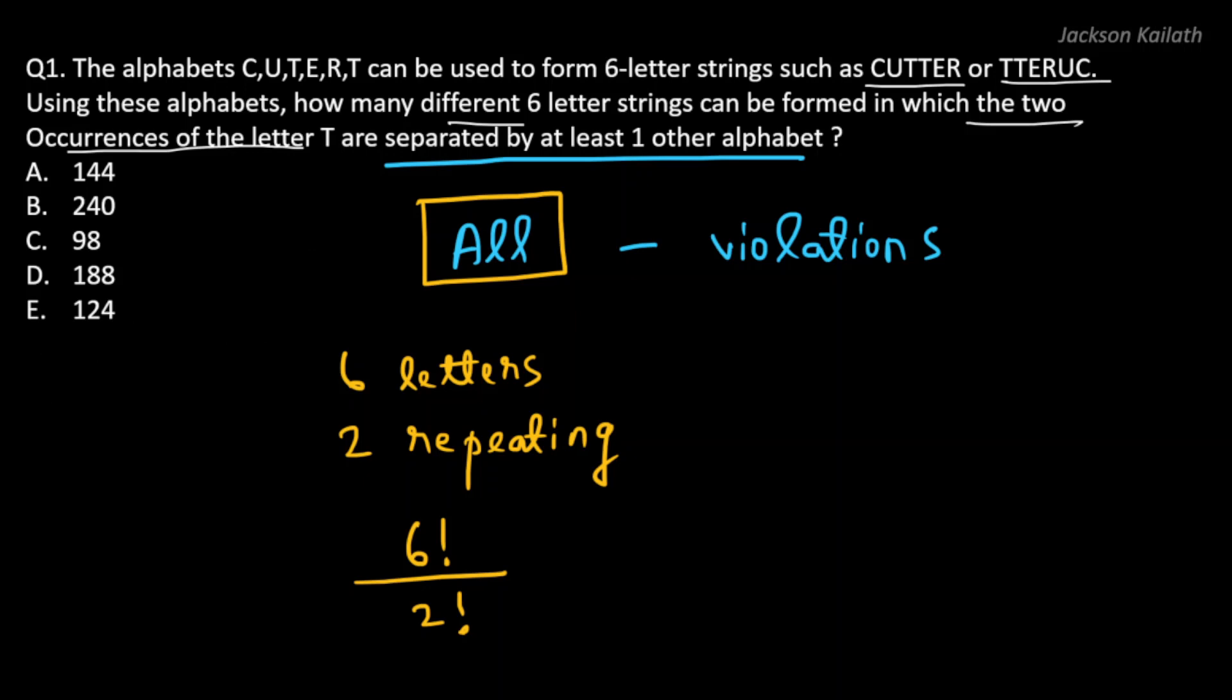Now we have found all the possible strings that can be formed, which is 6 factorial divided by 2 factorial. Now let's go ahead and try to find the violations. The violation would be if the two Ts are occurring together because the condition that we need to fulfill is that they should not be together.